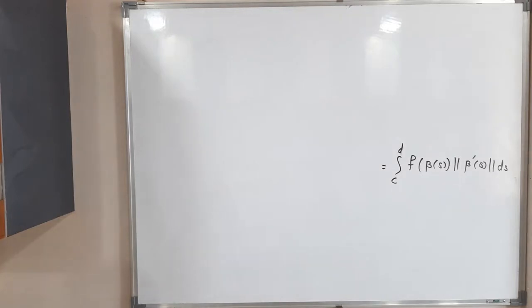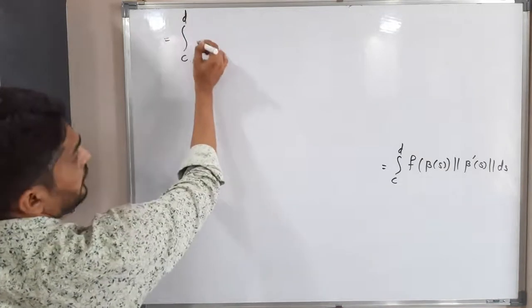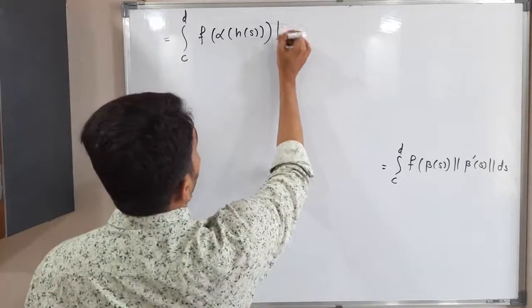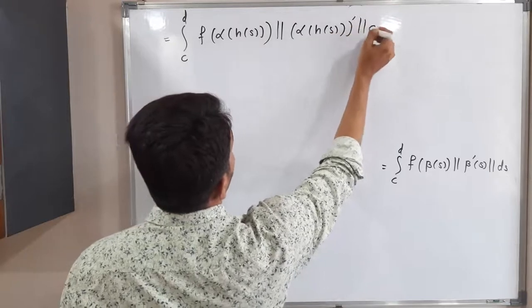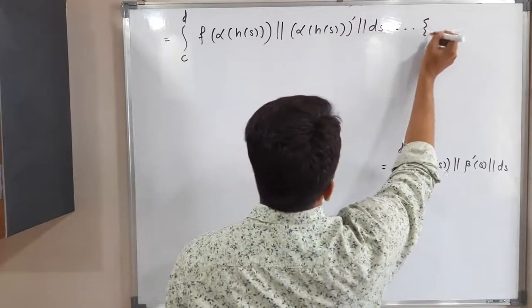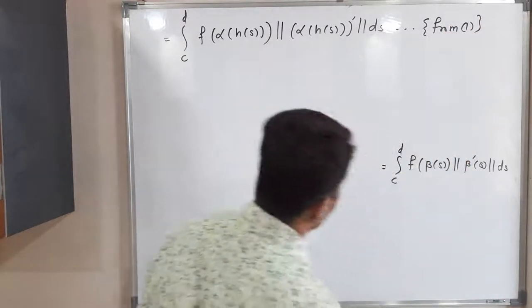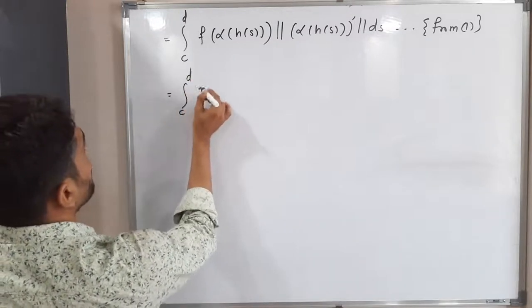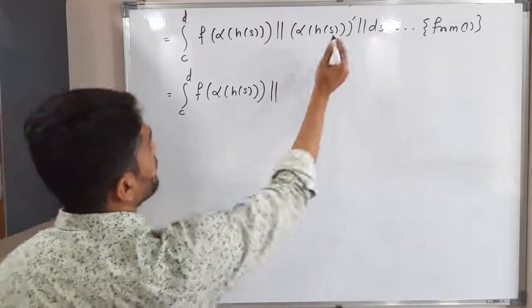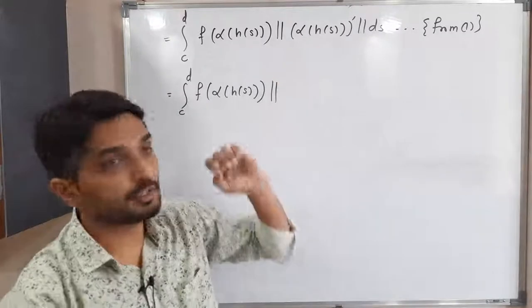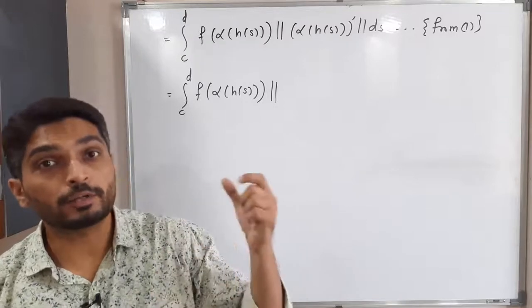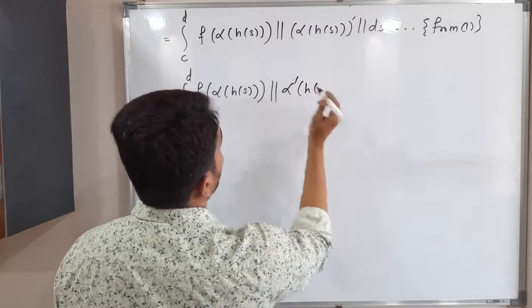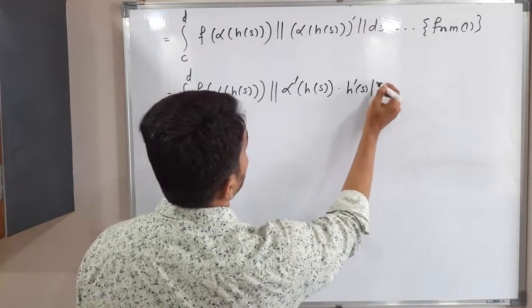Substituting beta(S) = alpha(H(S)), we get the integral from C to D of F(alpha(H(S))) · ||d/dS[alpha(H(S))]|| dS. Since alpha(H(S)) is a composition of two functions alpha and H, we apply the chain rule: the derivative of alpha(H(S)) with respect to S is alpha'(H(S)) · H'(S). So we have the integral from C to D of F(alpha(H(S))) · ||alpha'(H(S)) · H'(S)|| dS.